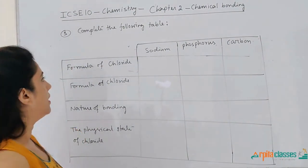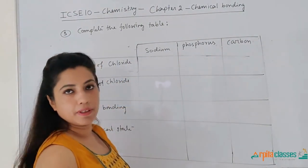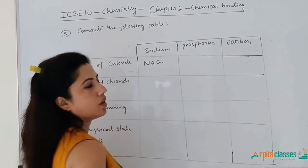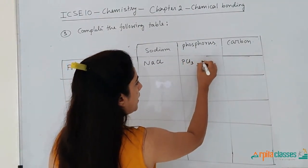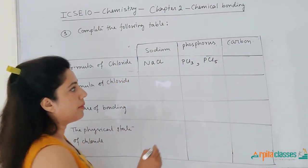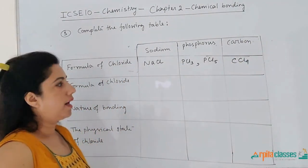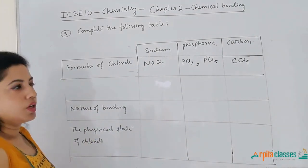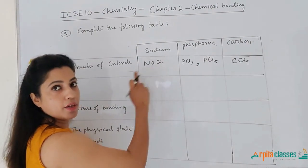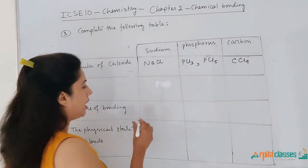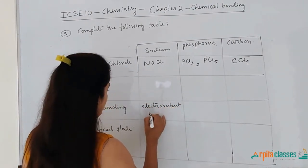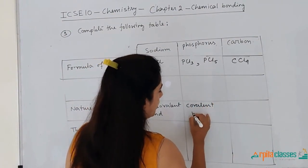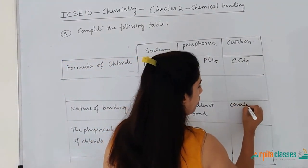In the third question, we need to complete a table. The elements are sodium, phosphorus and carbon, and we have to write the formula of their chlorides. The chloride of sodium is NaCl. The chlorides of phosphorus are phosphorus trichloride (PCl₃) and phosphorus pentachloride (PCl₅). The chloride of carbon is carbon tetrachloride (CCl₄). For nature of bonding: NaCl — sodium is a metal, chlorine is a non-metal — so the bond is electrovalent. For PCl₃, both are non-metals, so the bonding is covalent. For CCl₄, again both are non-metals, so the bonding is covalent.